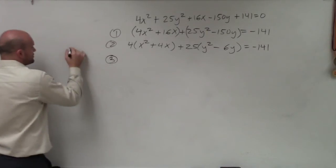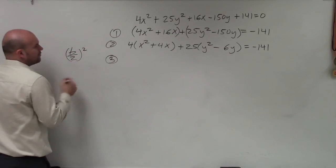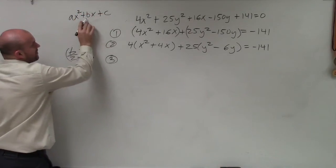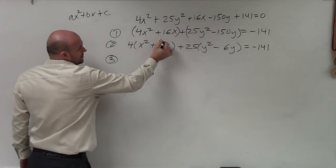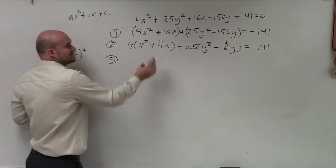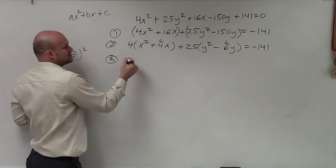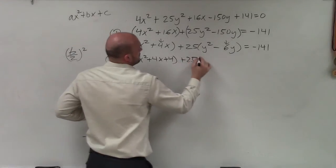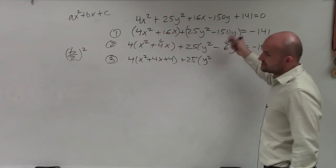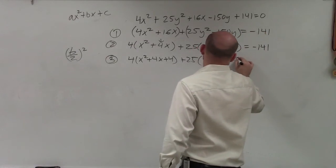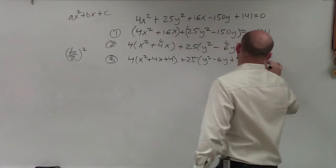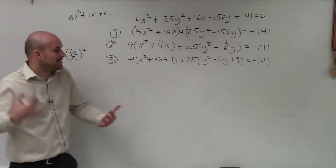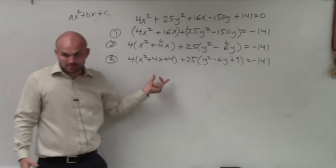So step three, if you guys remember, you just take b divided by 2 and square. Well, what is b again? Remember, b is your coefficient of your linear term. That's my b. So here is my b. Here is my b. So what I do is I take 4 divided by 2 and square it. Negative 6 divided by 2 and squared it. Now, hopefully you guys see, by taking my b, divide it by 2, I now have two perfect square trinomials.